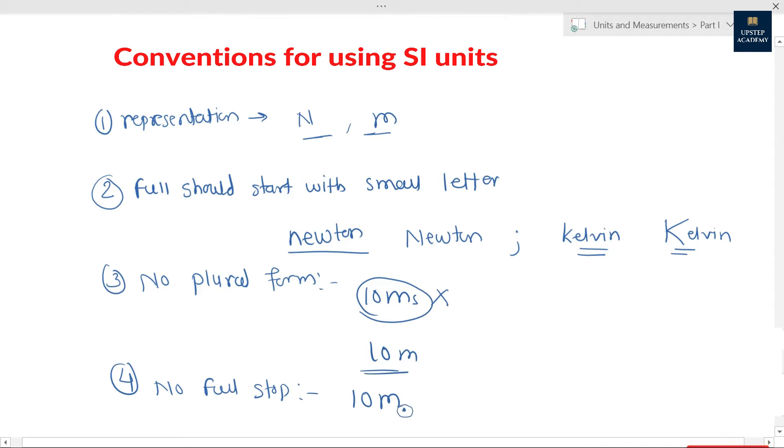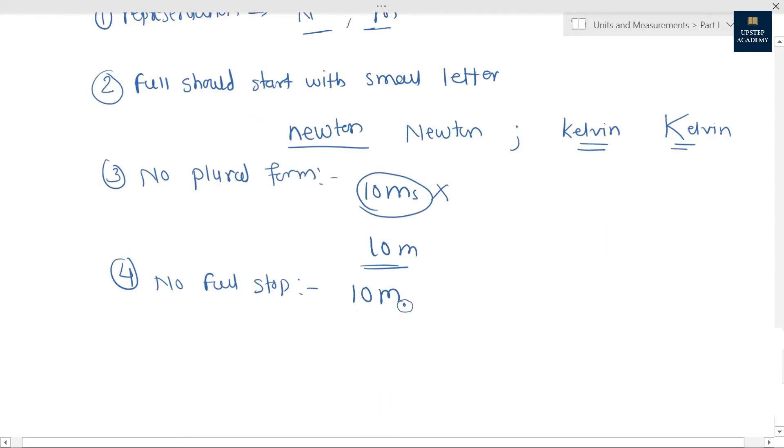Suppose one sentence is ending with one symbol. At that time you can give full stop, but immediately after symbol, in between, if symbol is coming, then you can't give any full stop. That is what the fourth convention.